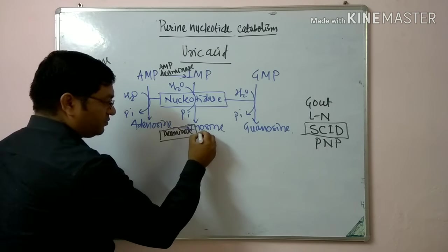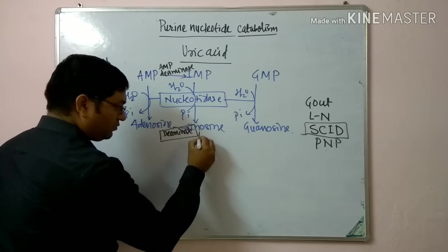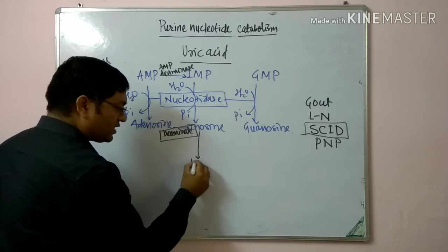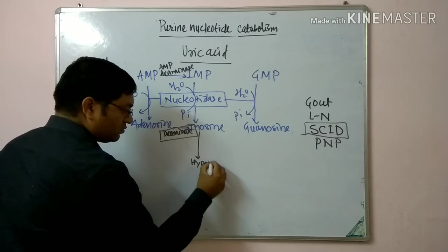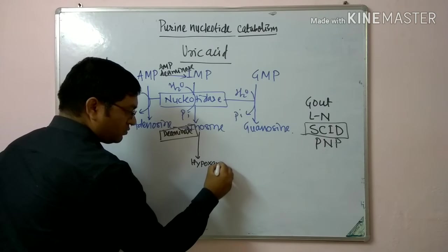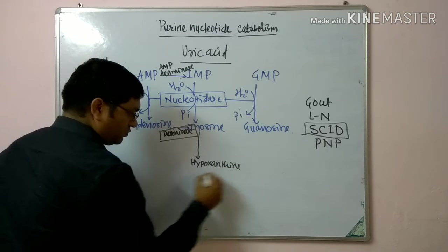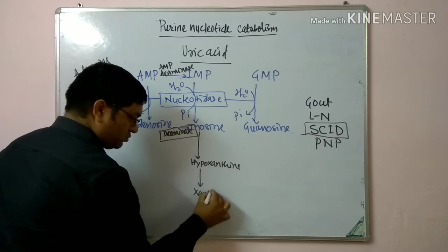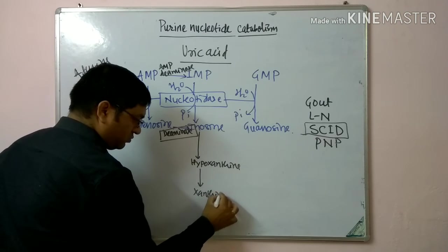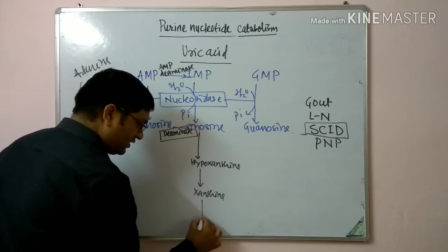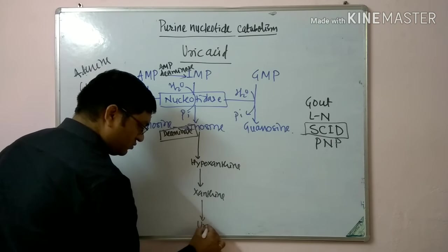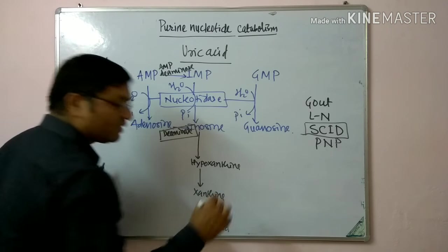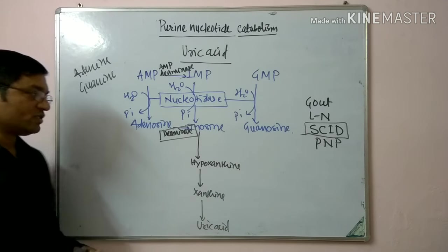Inosine is converted into hypoxanthine, then xanthine, and then uric acid. Uric acid is the end product of purine catabolism.